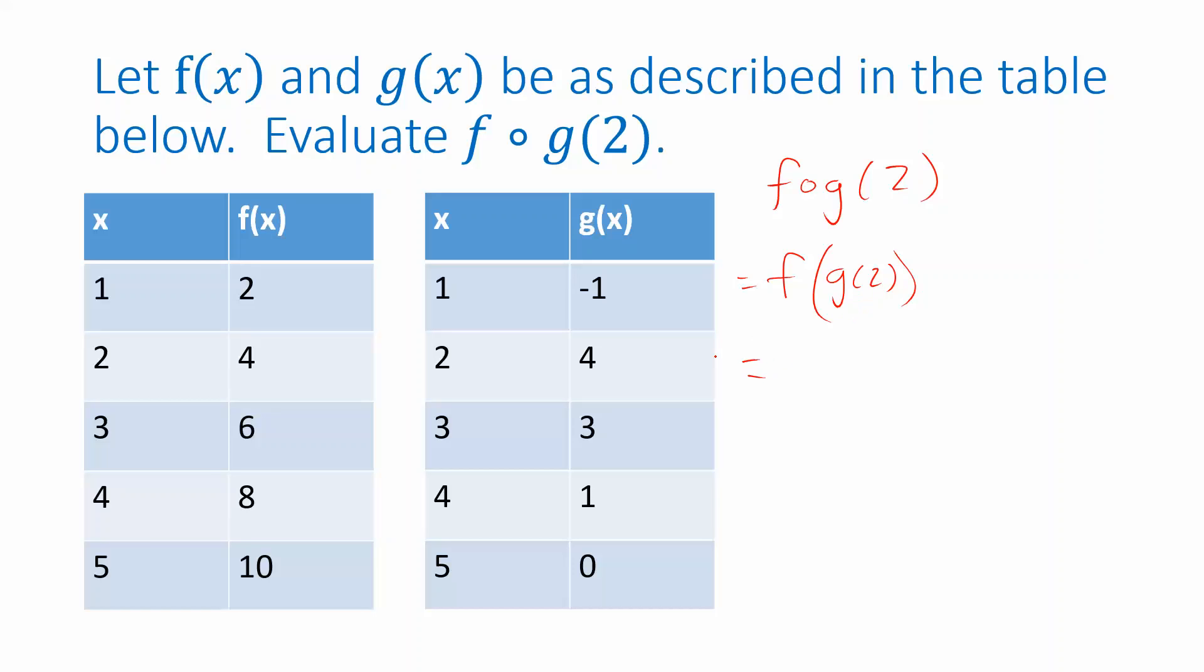So we can get these values by looking them up in the table. g of 2, that's going to come from the table for g. If I plug in a 2, this table says g of 2 is 4. So that's what we're plugging into the function f. And then if I use the table for f to evaluate the output when I plug in a 4, I can see f of 4 is 8. So that's it. f composition g of 2 is the number 8.